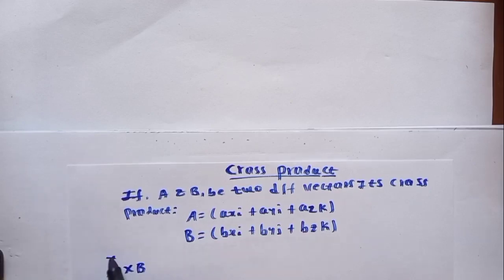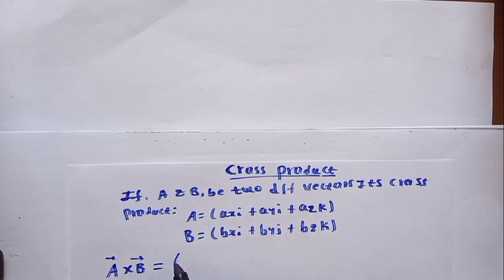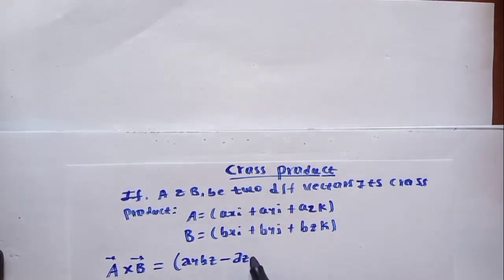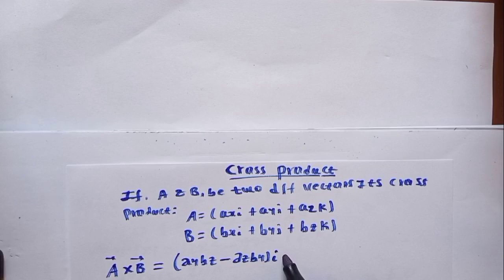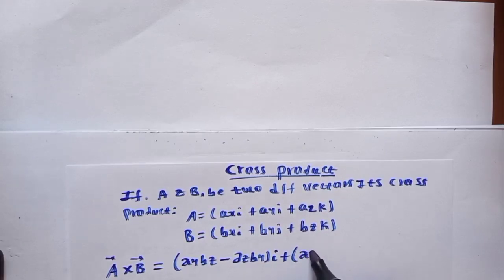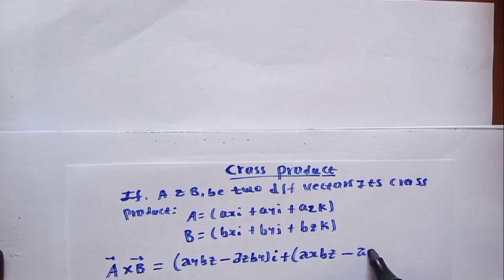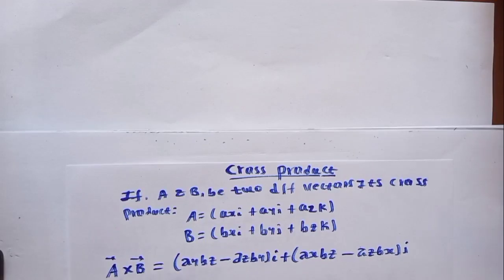Cross product: if a and b are two different vectors, the cross product a cross b equals (ay·bz minus az·by) in the i direction, plus (ax·bz minus az·bx) in the j direction.